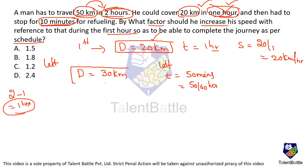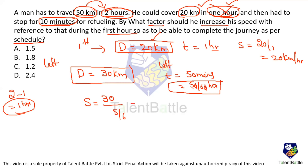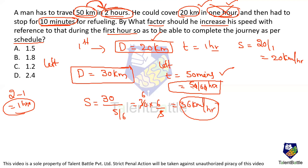He needs to cover 30 kilometers in 5 by 6 hours. Speed equals distance divided by time: 30 divided by 5 by 6 equals 30 into 6 by 5, which is 36 kilometers per hour. If he maintains 36 km/h for those 50 minutes, he will complete the 30 kilometers and finish the 50-kilometer journey in 2 hours as planned.